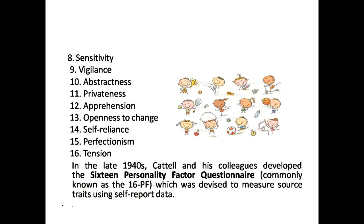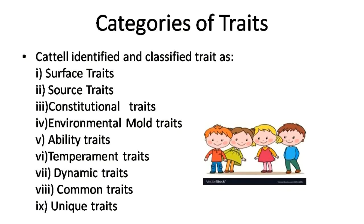In the late 1940s, Cattell and his colleagues developed the 16 Personality Factor Questionnaire, also commonly known as the 16PF, which was devised to measure source traits using self-report data. Cattell identified and classified traits as: surface traits, source traits, constitutional traits, environmental mold traits, ability traits, temperament traits, dynamic traits, common traits, and unique traits.